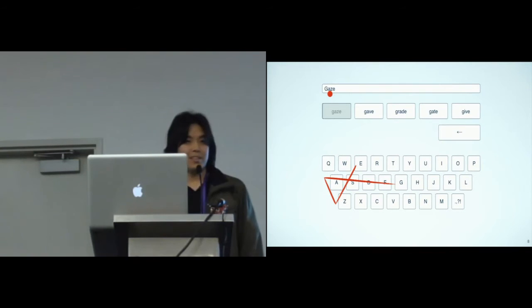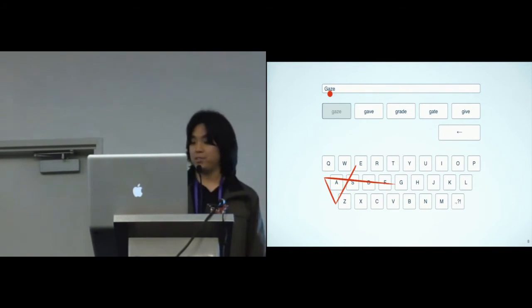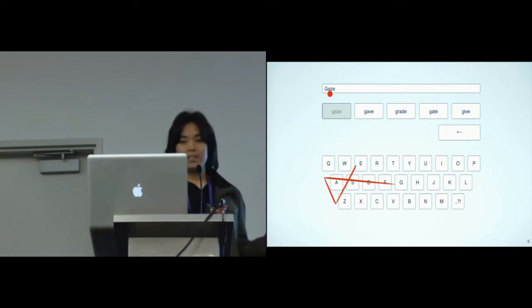If, however, the wrong word was selected by iSwipe, she can choose another word on the top of the interface. For example, she can select the word grade instead by reverse crossing.